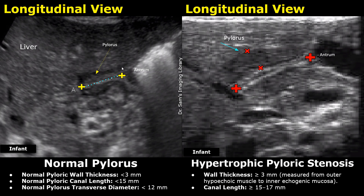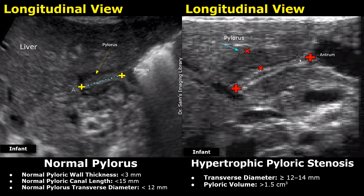These are longitudinal views focusing on the pylorus in infants. On the left is a normal image showing the pyloric canal — the normal pyloric canal length is less than 15 millimeters, and the pyloric transverse diameter is less than 12 millimeters. In the image on the right, we see a thickened enlarged pyloric canal. The muscle wall thickness, which can also be measured in this view, is greater than 3 millimeters. The canal length in such cases is usually 15 millimeters or greater — it can even be 20 millimeters depending on severity. In pyloric stenosis, the transverse diameter of the pylorus is greater than 12 millimeters in infants, and the pyloric volume will be greater than 1.5 cubic centimeters.